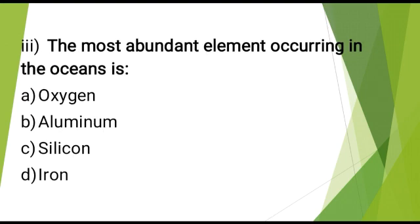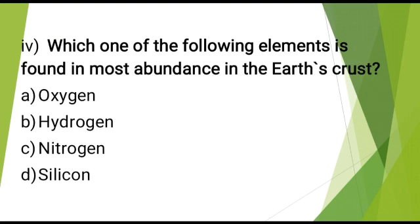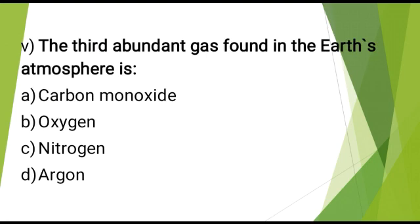The most abundant element occurring in the oceans is? The correct answer is: oxygen. Which one of the following elements is found in most abundance in the earth's crust? The correct answer is: oxygen. The third abundant gas found in the earth's atmosphere is? The correct answer is: argon.